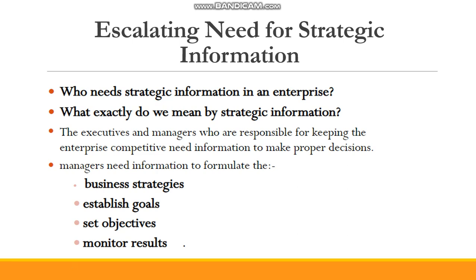Strategic information means information that enables decisions to be made. For example, last year's profit, what were the sales, how was the marketing strategy, what improvements can be done for the new year so that we have more profits, and if there was a loss in some area, why did it happen? After review, survey, and analysis, that information is called strategic information — because on the basis of that information, they can make proper decisions, form strategies, add or remove certain things, and execute those decisions.